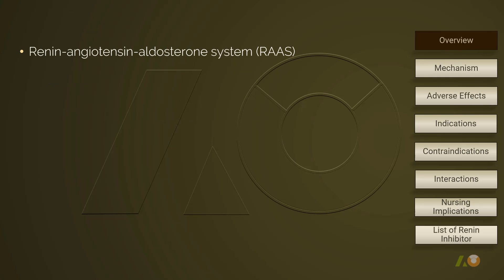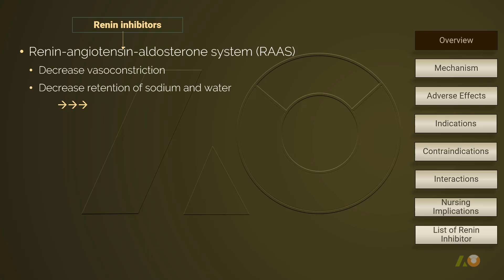A renin inhibitor blocks the RAS responses by binding to renin, prohibiting renin's catalytic effect on conversion of angiotensinogen to angiotensin 1. As it stops the first step in the RAS responses, the subsequent reactions such as vasoconstriction and retention of sodium and water are prohibited. Then blood pressure, preload, and afterload all decrease.